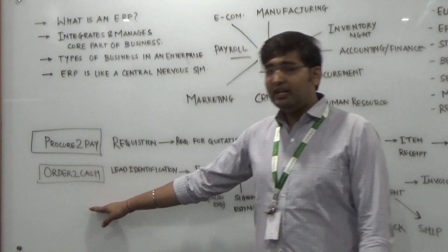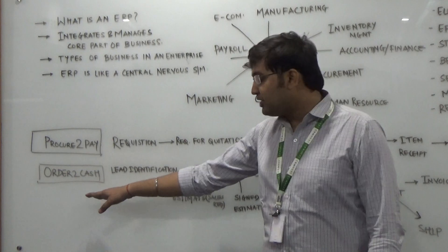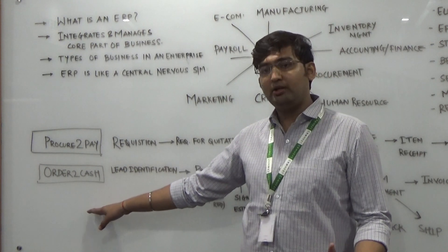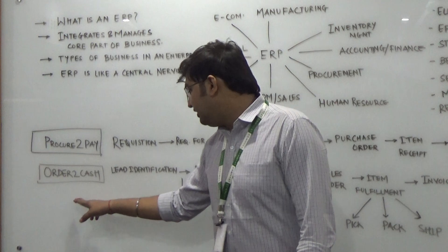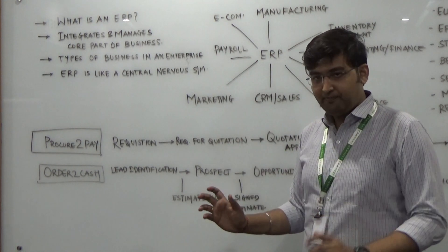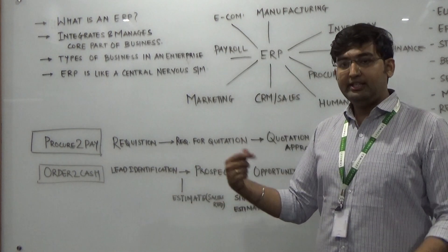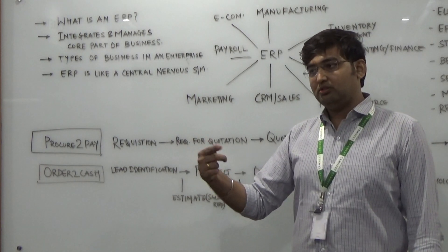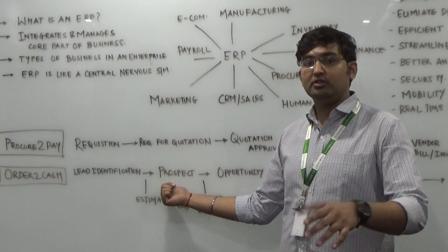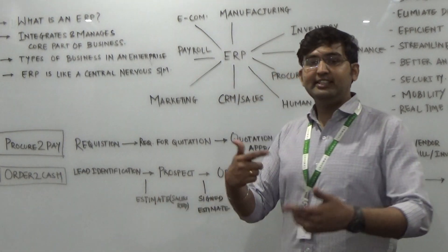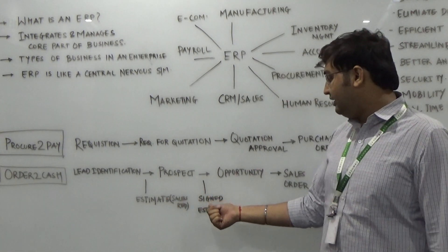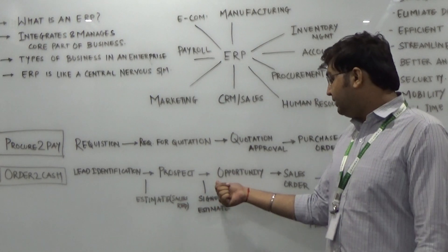But in an ERP system, we have various measures of lead identification — through web portal, through marketing strategies. After the lead has been identified, we give an estimate to the lead: for example, if you want 10 items, this is the estimate. If the lead agrees and is ready to review the estimate, that lead is converted into a prospect. There are various negotiations; if the estimate is signed by the lead, the lead becomes an opportunity.